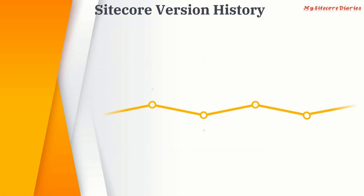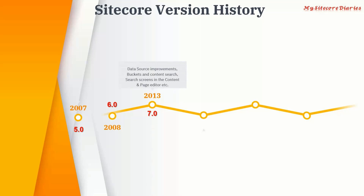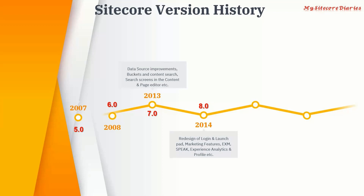Let's look at the different Sitecore versions. In 2007, Sitecore released version 5.0; the next year they released 6.0. In 2013, they released 7.0 — a major release which introduced data source improvements, bucket and content search, search screens, and the page editor. In 2014, they released 8.0, also a critical release — most current legacy sites are on this version. It featured a redesigned login and launch pad, marketing features, Experience Analytics, and profile functionality. Most legacy sites are still on 8.0.